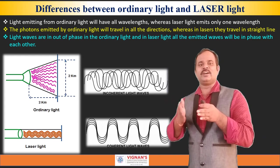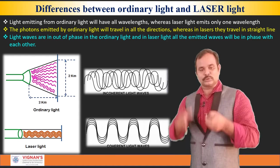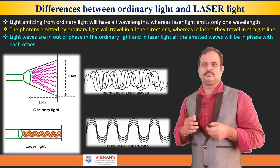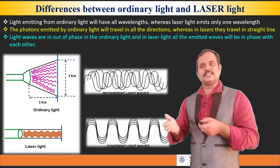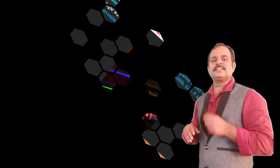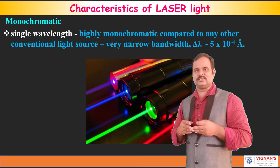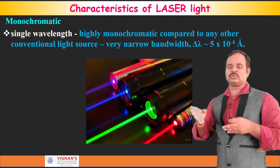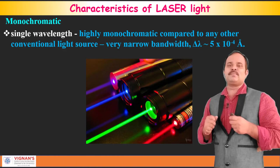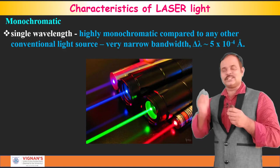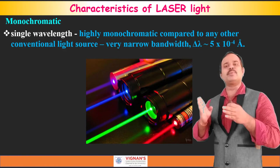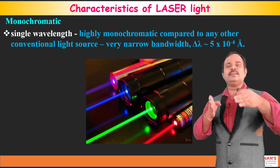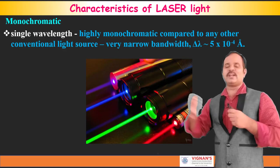Let's discuss in more detail all these characteristics of the laser. From this slide, we understand that lasers have different characteristics compared to ordinary light. The first characteristic of the laser is monochromaticity. Monochromatic means single wavelength. The light which is emitting from the laser source will have only one color. The spectral line width is of the order of 5 × 10⁻⁴ angstroms — it's very small. So we can say that the light which is emitting from the laser source is monochromatic in nature.